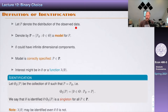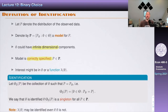Let P be the distribution of the observed data — in our case Y and X. We denote by bold P the model for P, indexed by a parameter theta. Importantly, theta is allowed to have infinite-dimensional components — it's not just beta, it could also include the distribution of U conditional on X, which is an infinite-dimensional object. The model is correctly specified if the distribution of the data we observe belongs to the model we posit. Often we won't care about identifying all of theta, but only a function of theta, denoted lambda of theta — for example, just beta and not the other distributions.